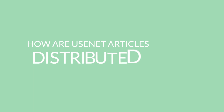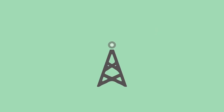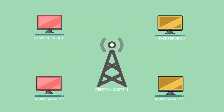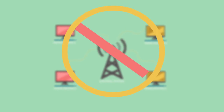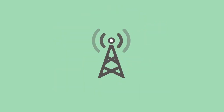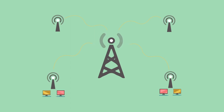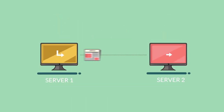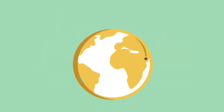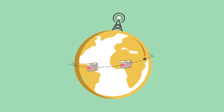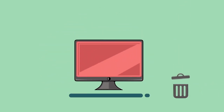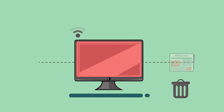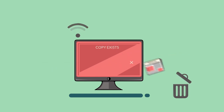How are Usenet articles distributed? There is no central system to broadcast each new article to all the news servers in the world. Instead, each news server connects to other news servers at regular intervals. When the servers connect, they pass articles back and forth. In this way, new articles are passed from one server to another until they are propagated around the world. Each article has a unique identification number so a server doesn't get more than one copy of the same article.